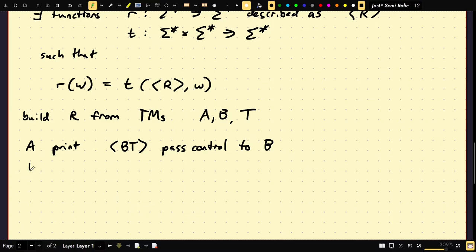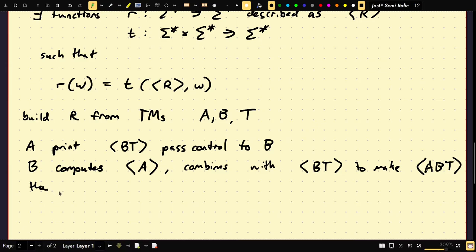Then B computes, as defined earlier, computes the encoding of A, and combines with B, T. Combines with B, T to make A, B, T. Then it's going to pass control to T.